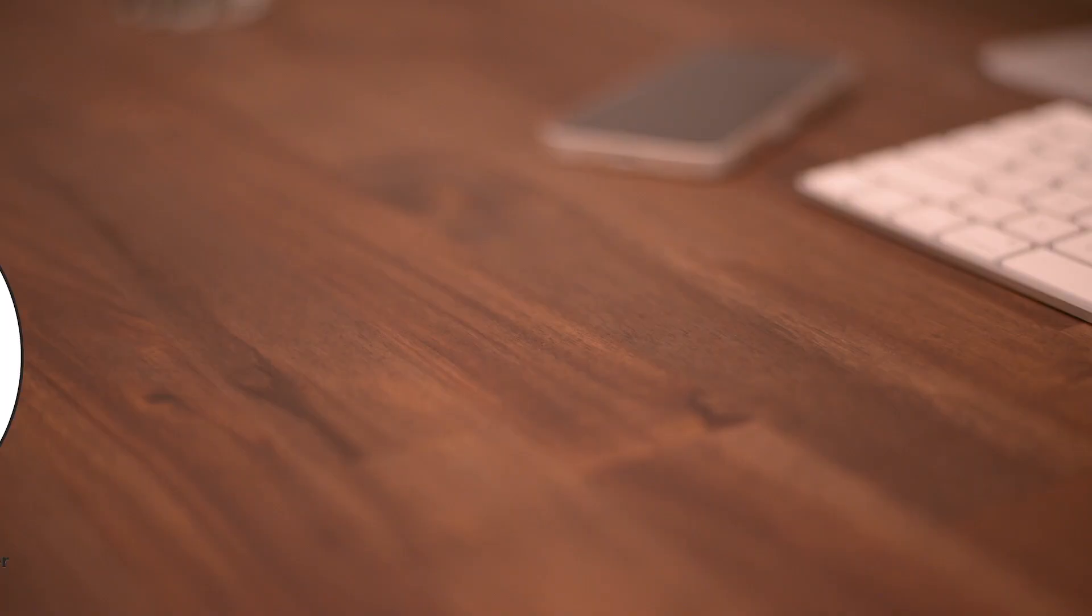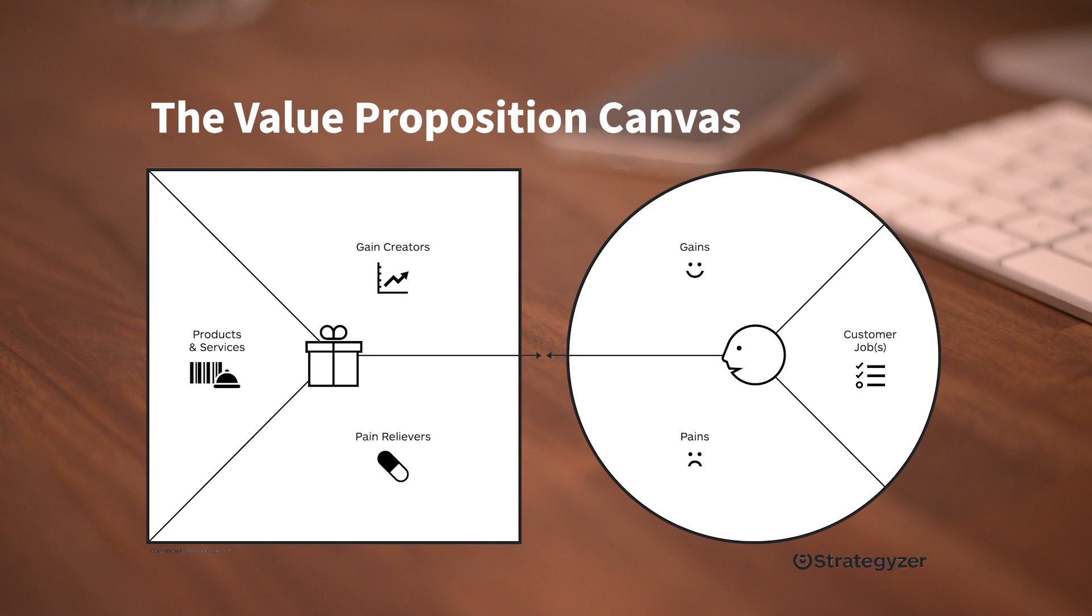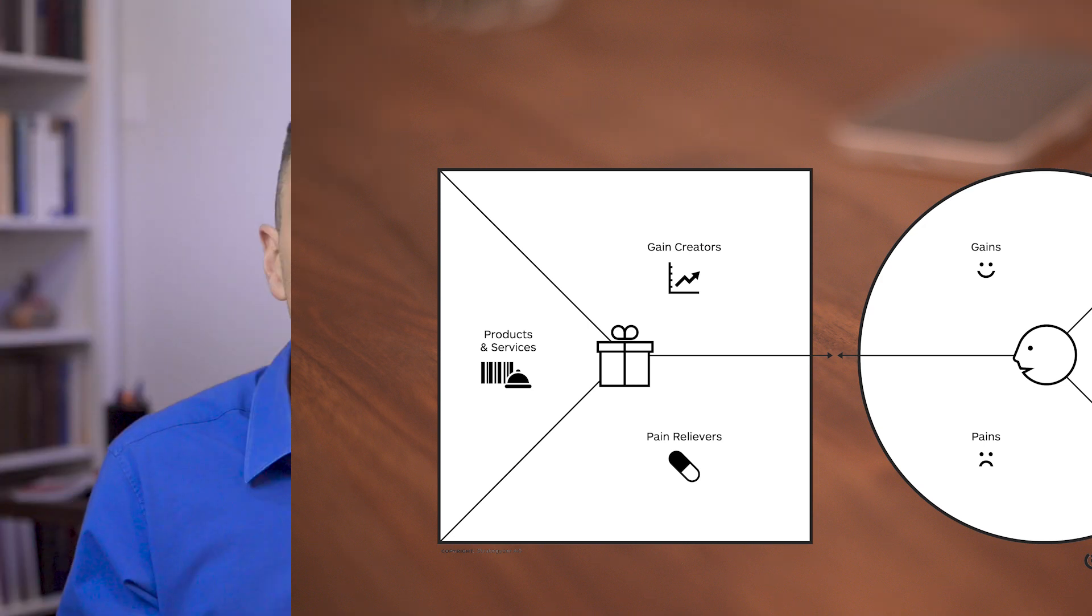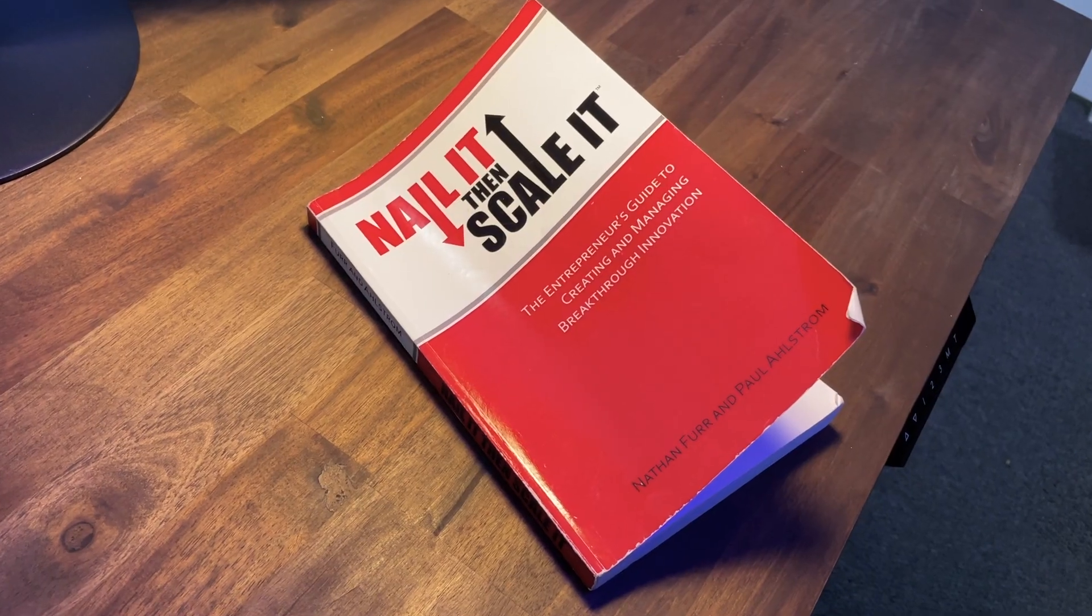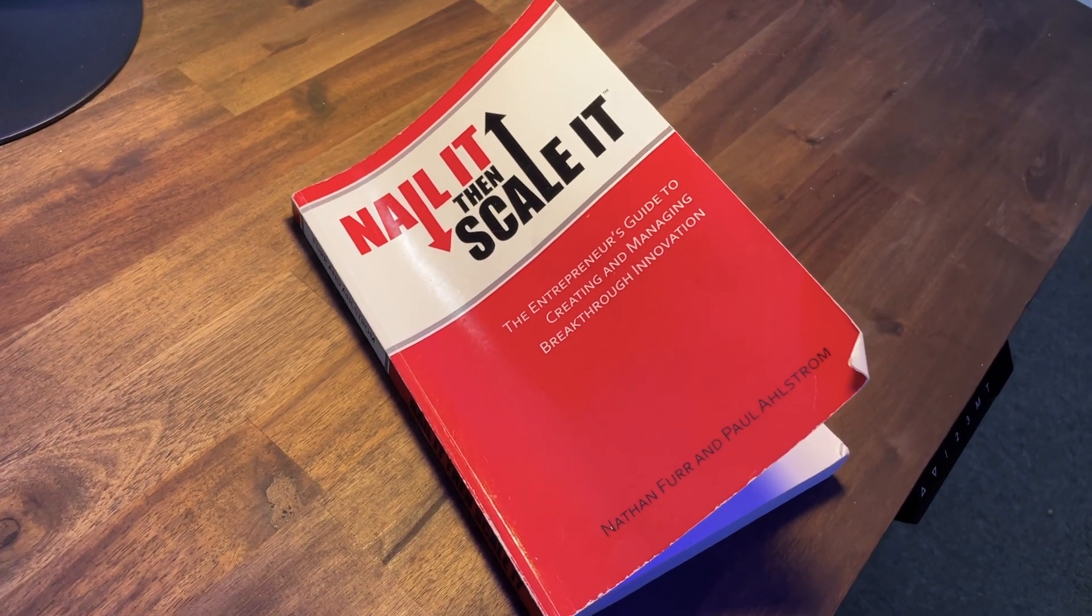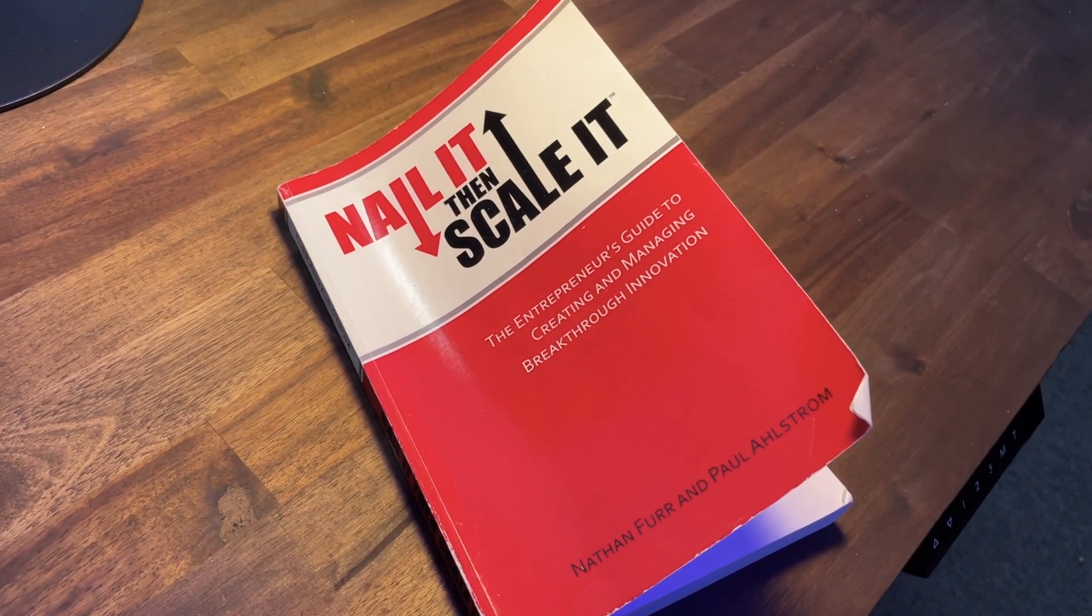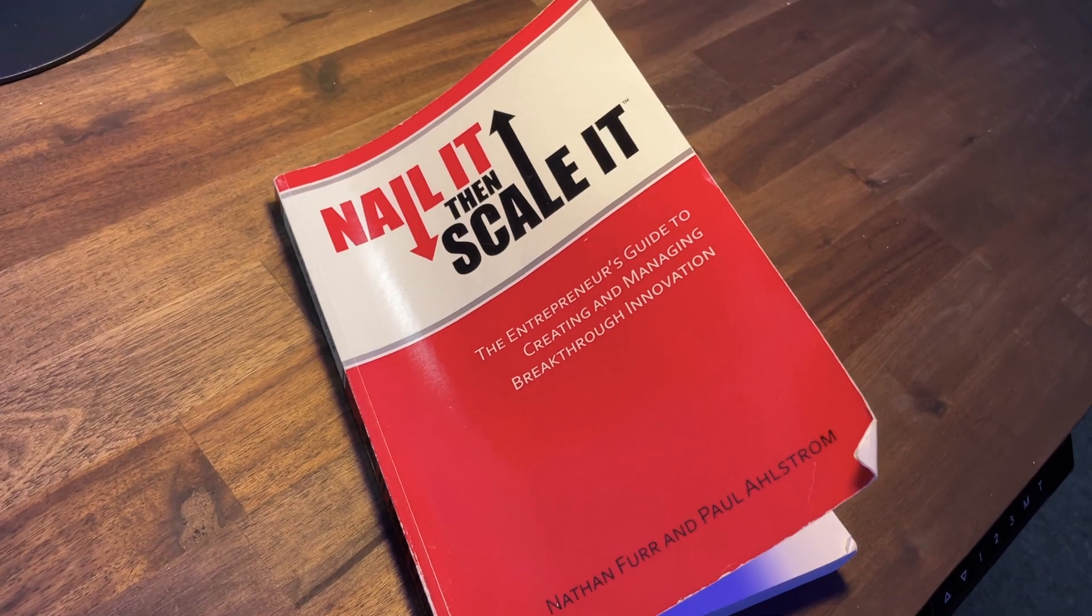We're going to build a hypothesis using the value proposition canvas by Strategizer. This is a great template for thinking through customer pains, gains, and jobs. From there, we'll come up with a monetizable pain statement and big idea hypothesis borrowed from Furr and Alstrom's book, Nail It Then Scale It. That will guide a lot of our communication as we reach out to potential users to conduct our research.